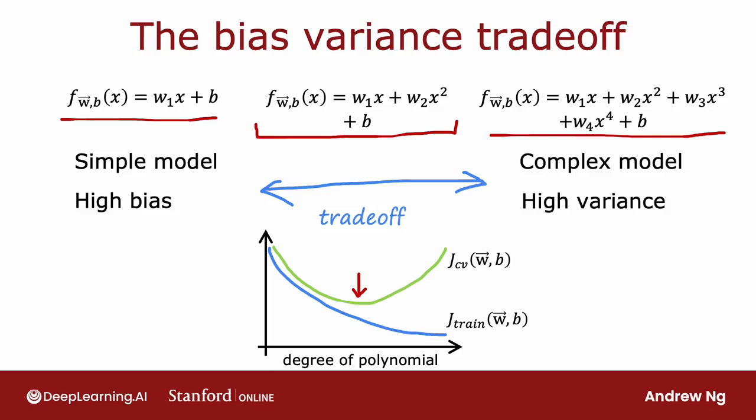Where if you have too simple a model, you have high bias, too complex a model, high variance. And you have to find a trade-off between these two bad things to find hopefully the best possible outcome. But it turns out that neural networks offer us a way out of this dilemma of having to trade-off bias and variance with some caveats.